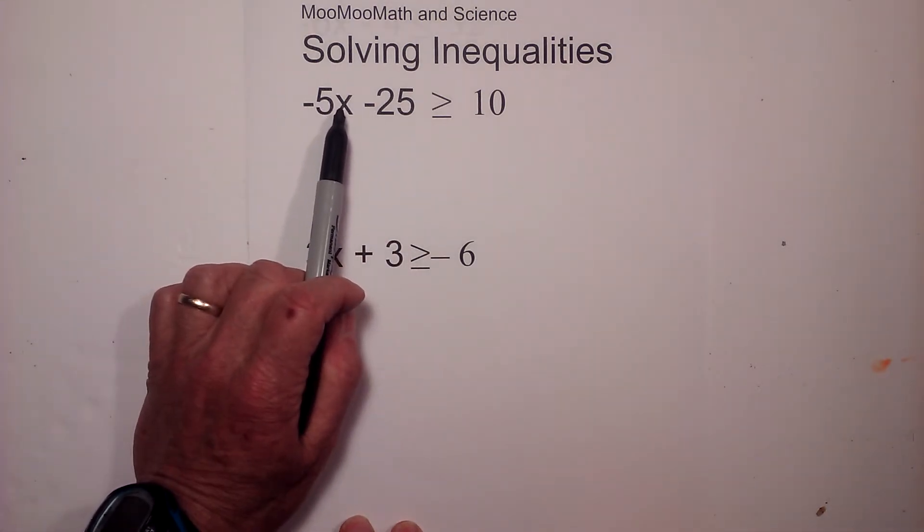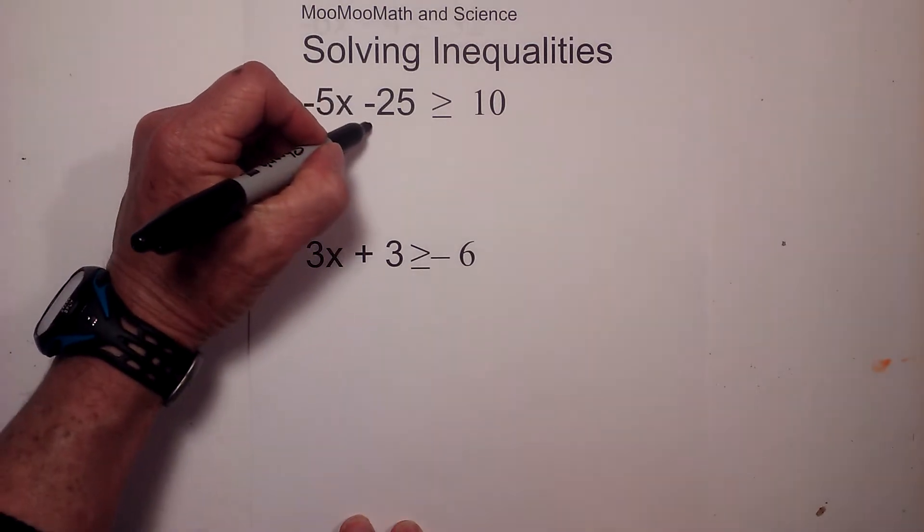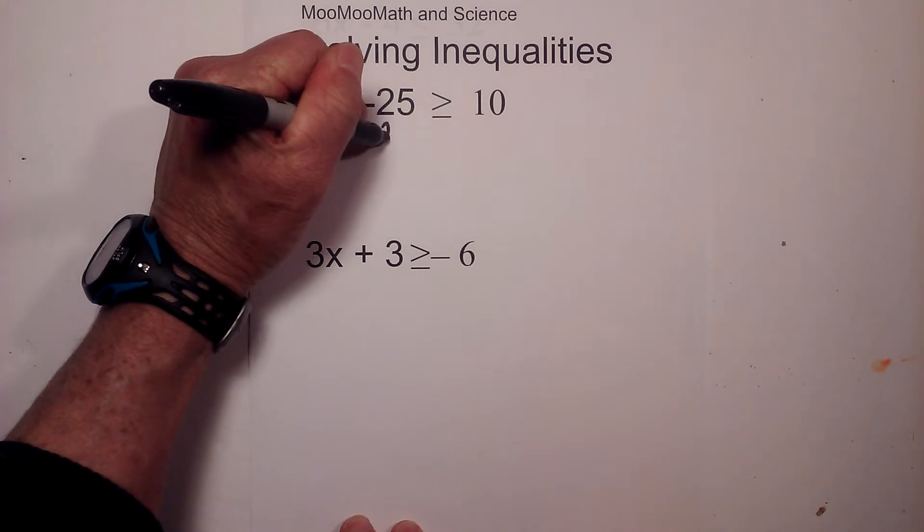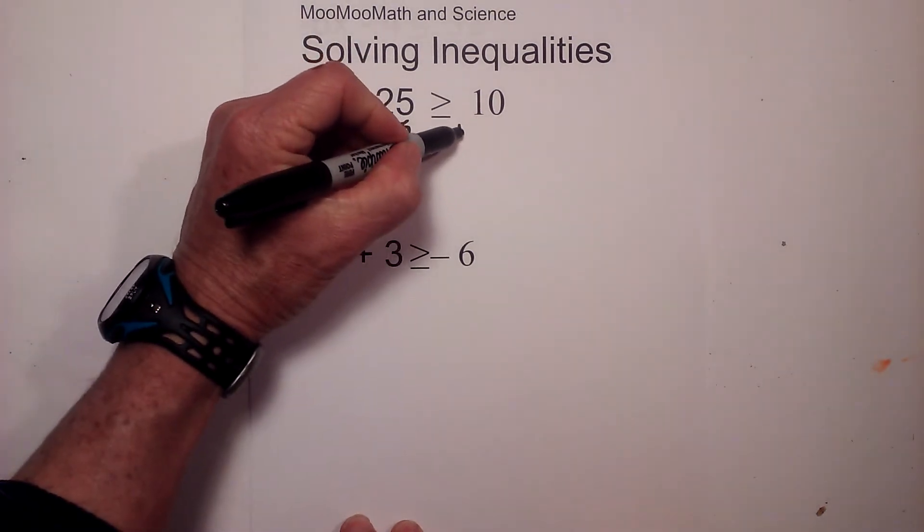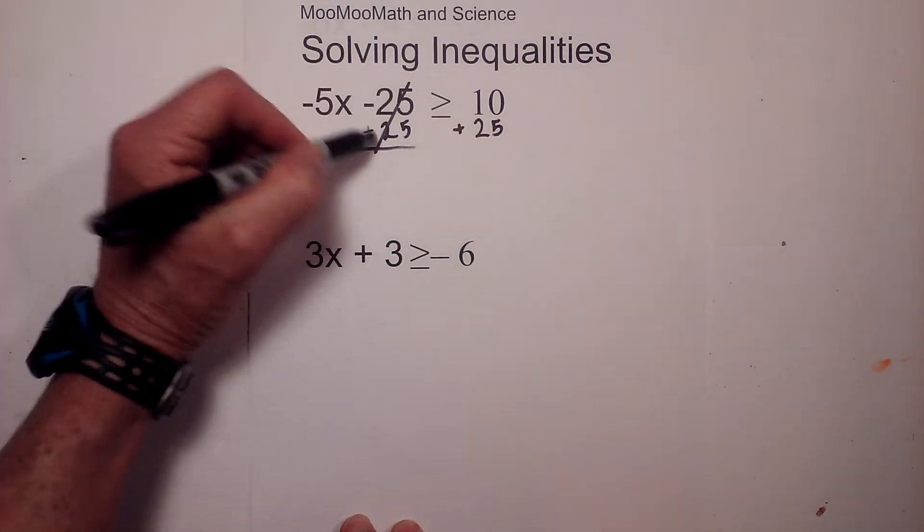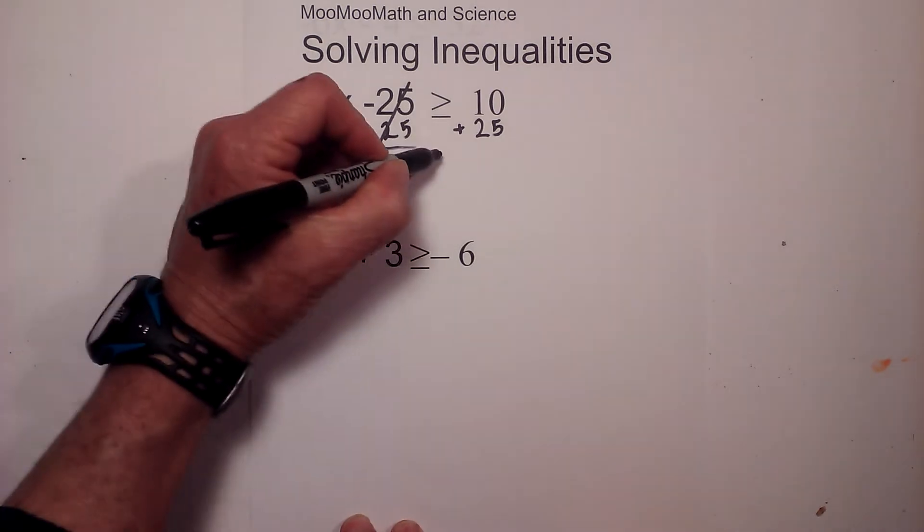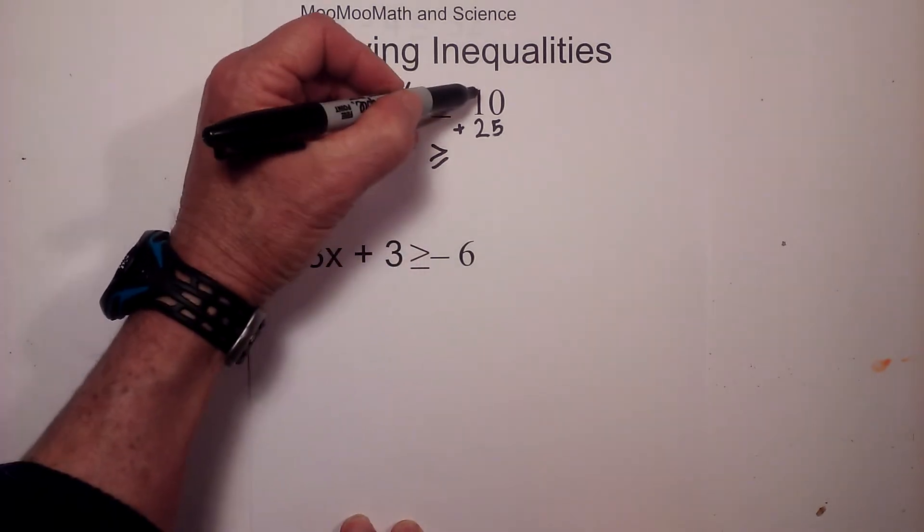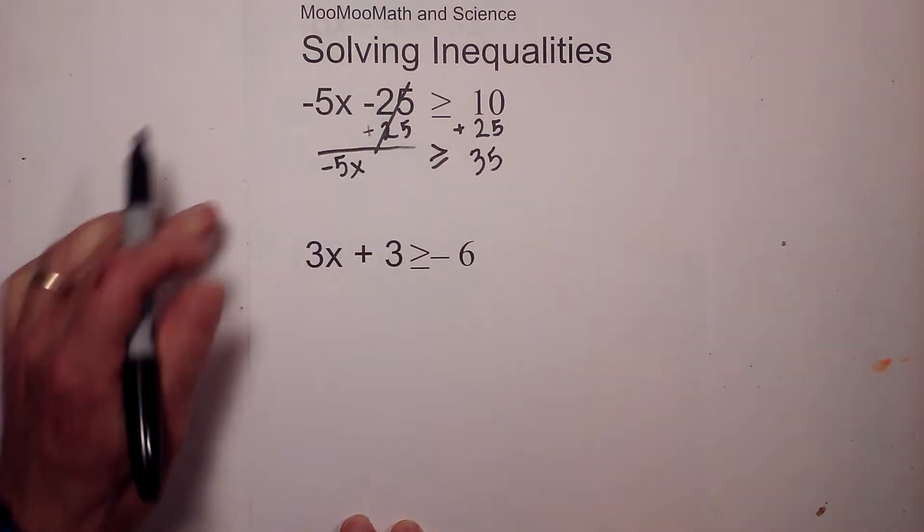Our goal is just to get x by itself. Let's get started. First thing we can do is add 25 to both sides. I'll draw a line down, add 25 to both sides, these cancel each other out.